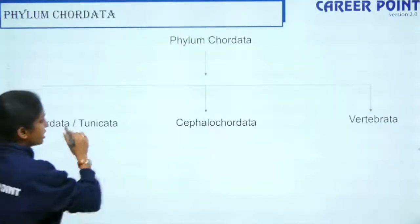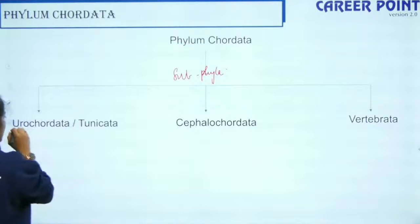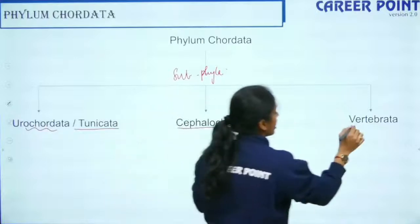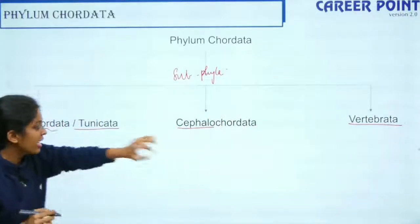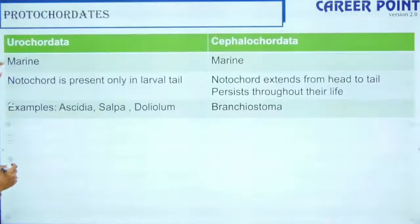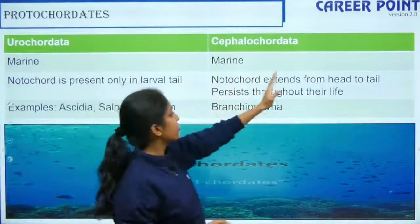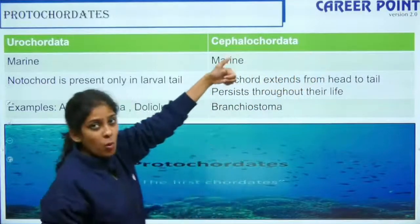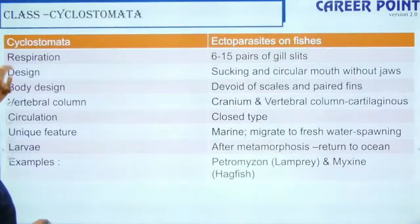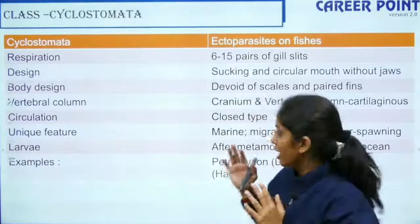Phylum Chordata has three subphyla. The first is Urochordata or Tunicata. The second is Cephalochordata. The third is Vertebrata. The first two are called Protocordates. The difference between Urochordata and Cephalochordata: 'cephalo' means head — when the notochord is present from head to tail it is Cephalochordata; when present only in the larval tail it is Urochordata.